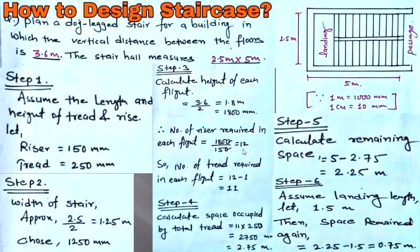The problem is: plan a dog-legged staircase for a building in which the vertical distance between the floors is 3.6 meters. The stair hall measures 2.5 meters by 5 meters. We are preparing the staircase hall whose length is 5 meters and breadth is 2.5 meters. Note that these 2.5 m and 5 m dimensions do not include the thickness of the wall. This layout includes the landing, passage, steps, flight one, and flight two, as a dog-legged staircase has two flights.